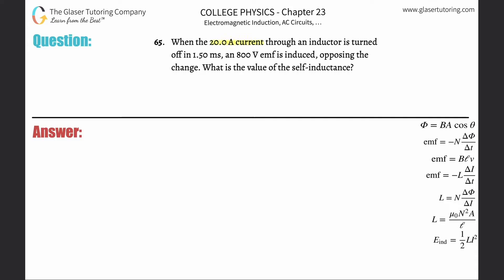Number 65. When the 20-amp current through an inductor is turned off in 1.5 milliseconds, an 800-volt EMF is induced opposing the change. What is the value of the self-inductance?